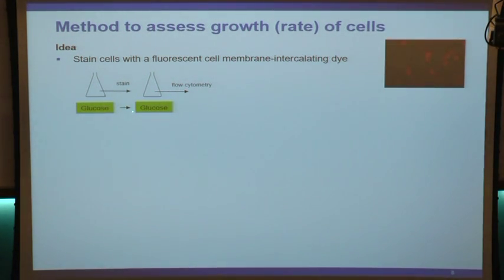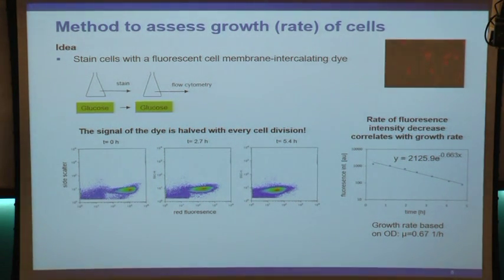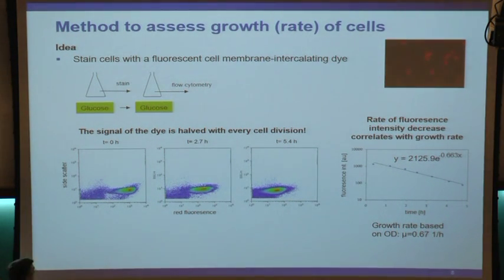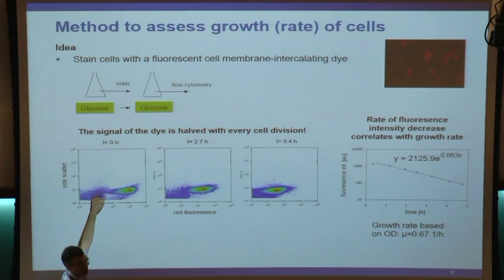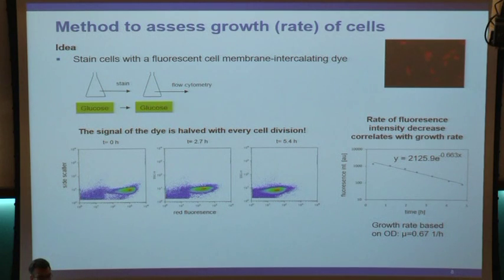We tracked the fluorescence of cells as they would grow. In this flow cytometric analysis result, the x-axis in log scale shows the fluorescence of the dye - red fluorescence - and the y-axis shows side scatter. The color scale indicates density of cells: red means many cells, green means fewer, blue even fewer. At time point zero, most cells are very bright - most are concentrated on the right.